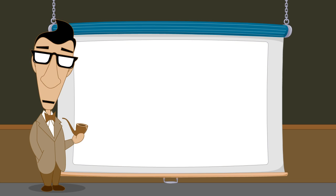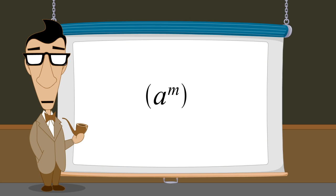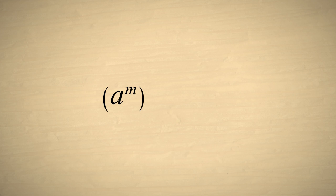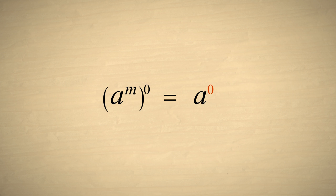Now what do you think would happen if we raise an exponential term to the zero power? If we raise any exponential term to the zero power, when we multiply the exponents, the result will always have an exponent of zero. So the result will always be equal to one. Just like numbers and variables, any exponential term raised to the zero power is equal to one.